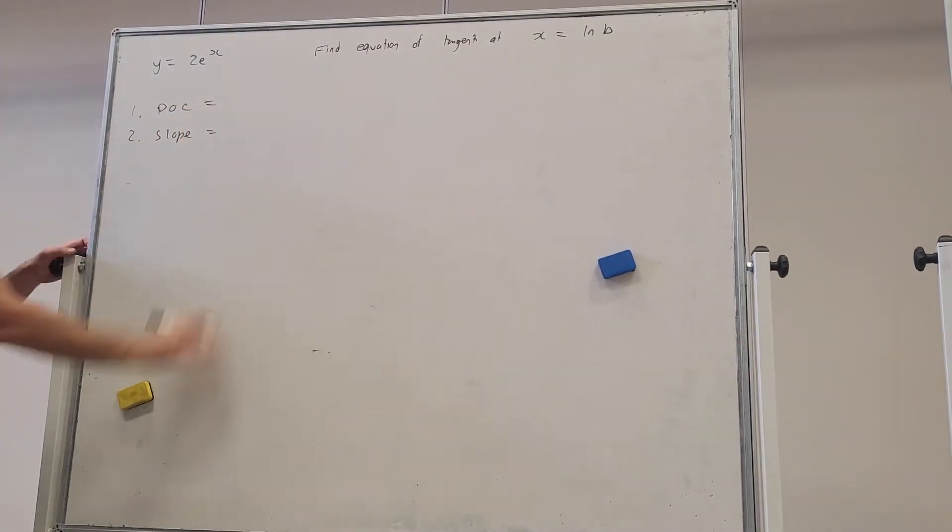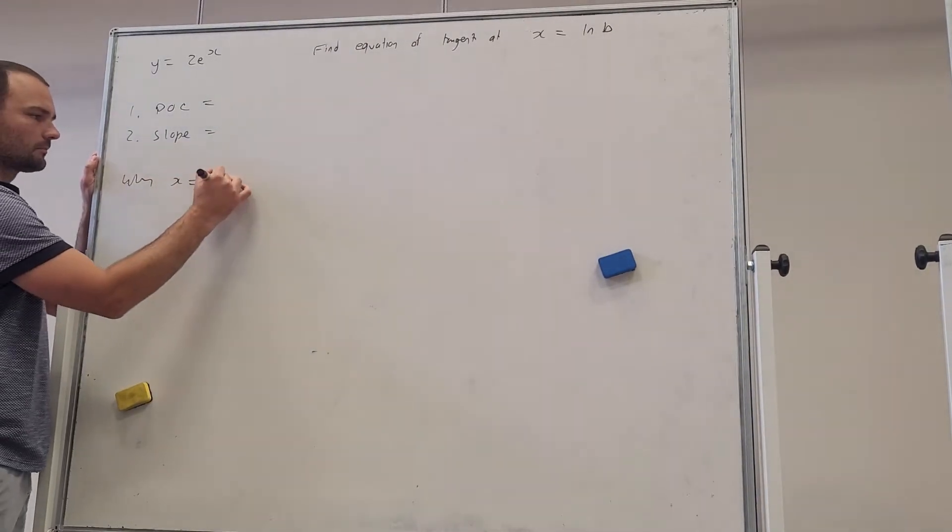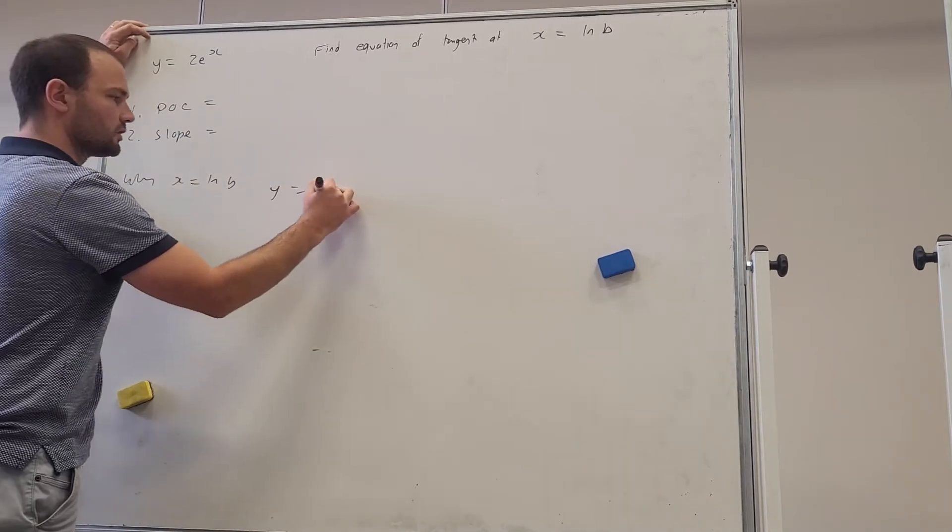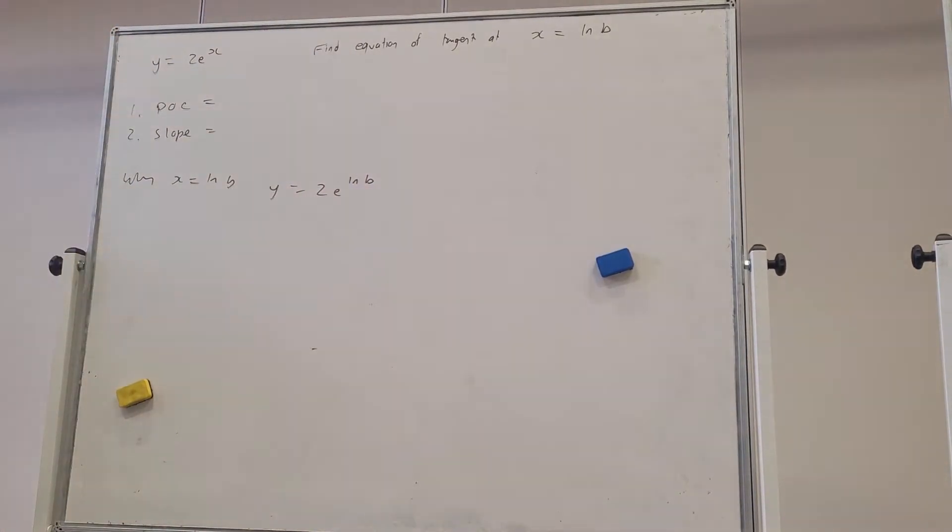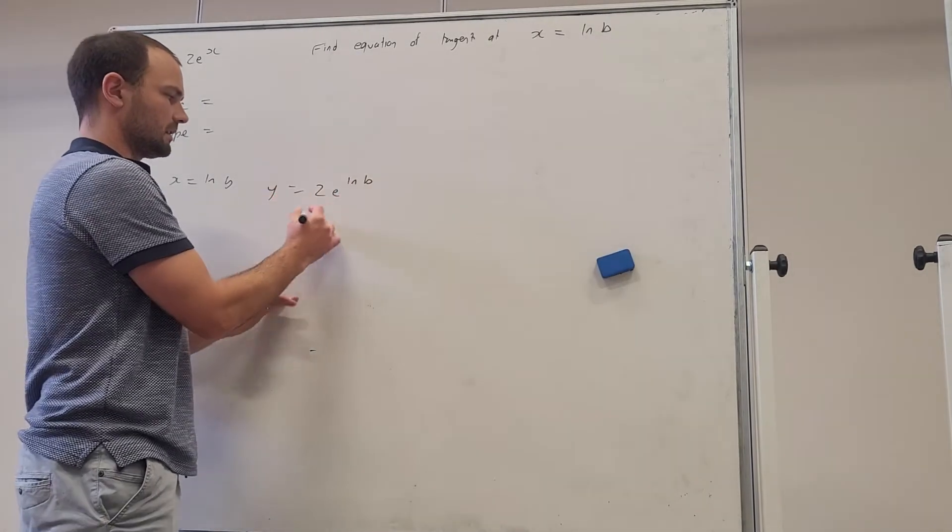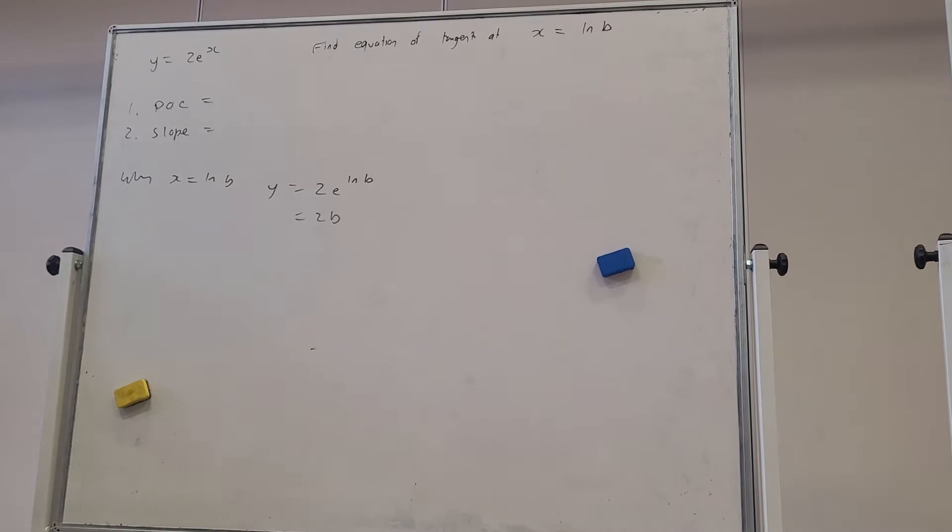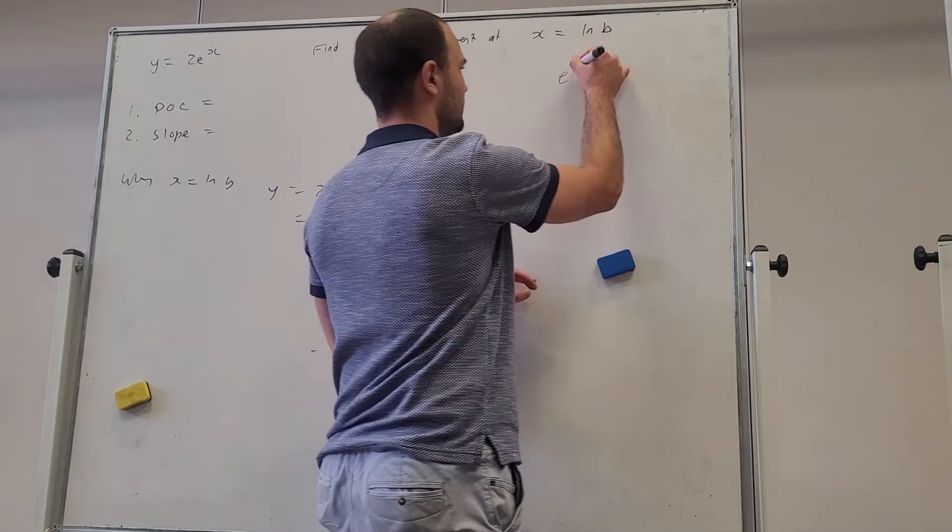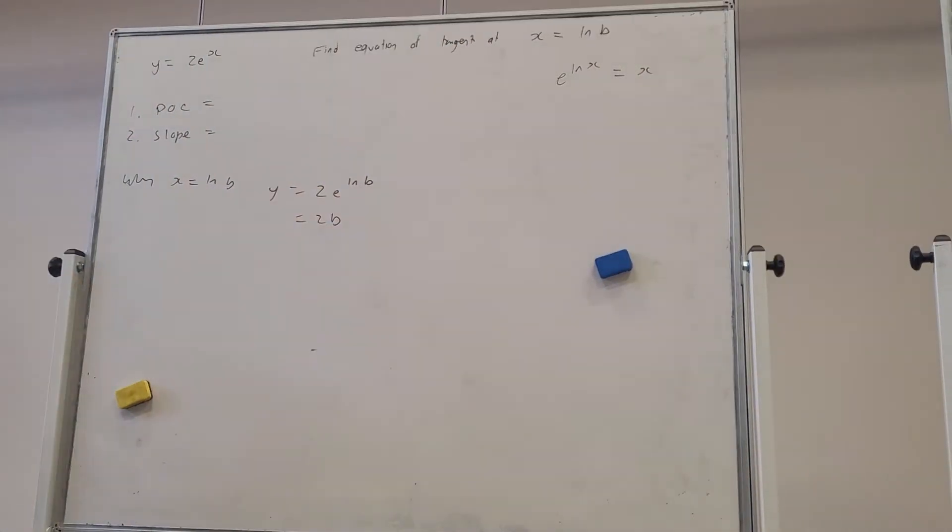So let's go ahead and find both of those things. Because when x is ln b, y is going to be 2e to the power of ln b. Now e to the ln x is x, so e to the ln b is going to be b. I'll just write that up there. e to the ln x is x, so e to the ln b will be b.